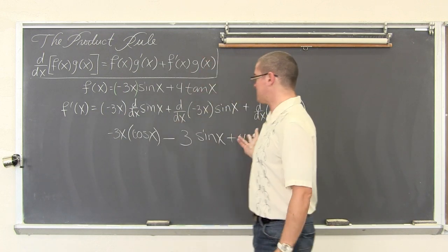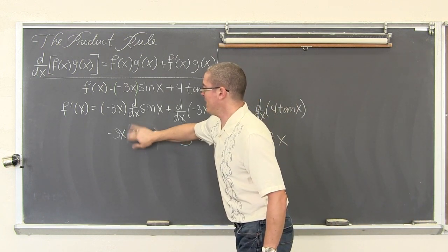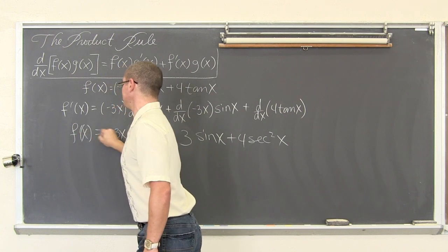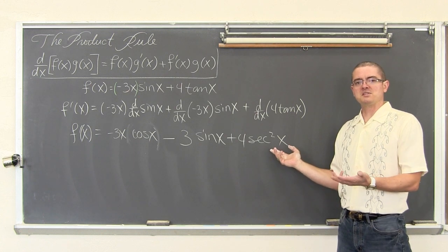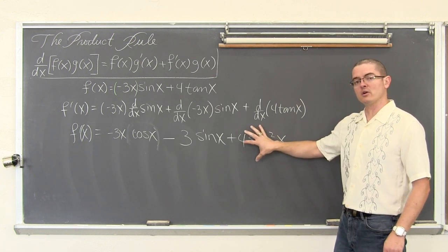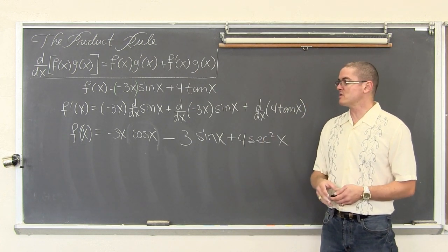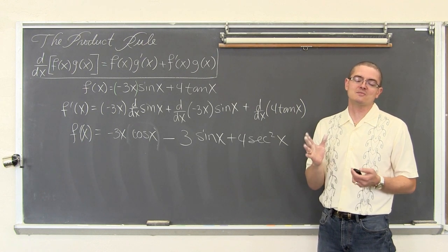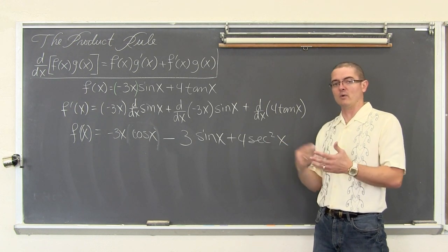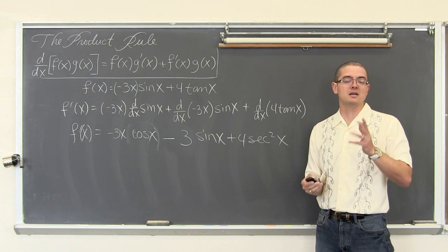With trig functions you might get what you feel is a correct final answer but not see it in the back of the book. For example, secant squared x is the same as 1 over cosine squared x, so you could rewrite 4 secant squared x as 4 over cosine squared x and then find common denominators. If your answer does not match the book, try to manipulate what you have to see if it is equivalent — it does not necessarily mean you have done it wrong.